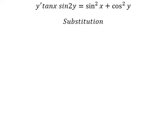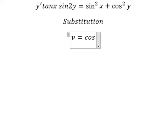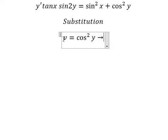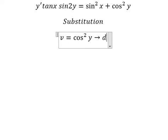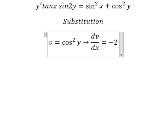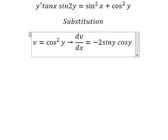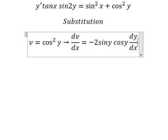I will put v equal to cosine squared y. If we do the first derivative for both sides, we get dv over dx equals negative two sine y cosine y, and we have dy over dx.